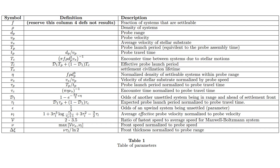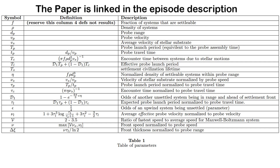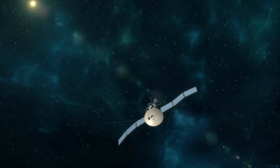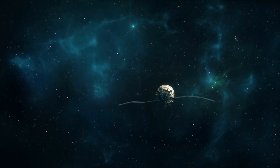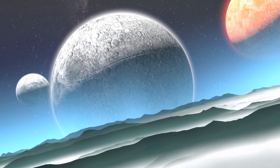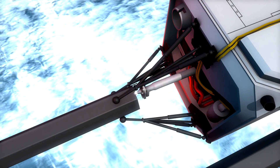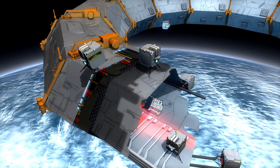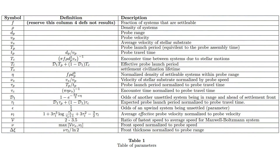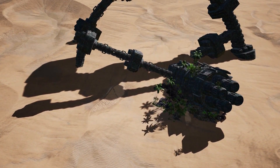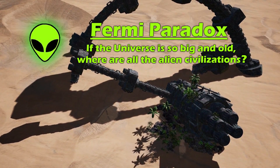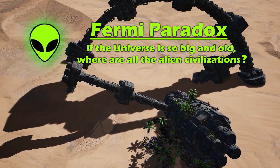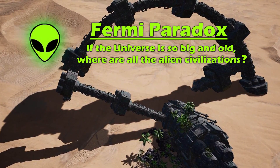Some of those parameters are the fraction of systems that are settleable, the density of systems — which is not uniform, as some regions of space will be near wastelands while others will be richer in worlds than our own region. We've also got probe or ship range and velocity, as those are major factors in not just how far and fast you can go, but how many candidate worlds you have access to. Others include probe or ship build and launch times, lifetimes of the settlement, average stellar motion if you're going slow enough to need that, and many more. This gets back to the Fermi Paradox more directly by reminding us of Michael Hart's Fact A in his original conjecture — sometimes called the Fermi-Hart Paradox because Hart is basically the guy who began the discussion.